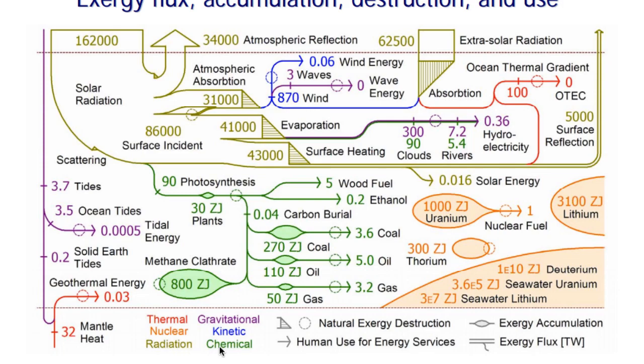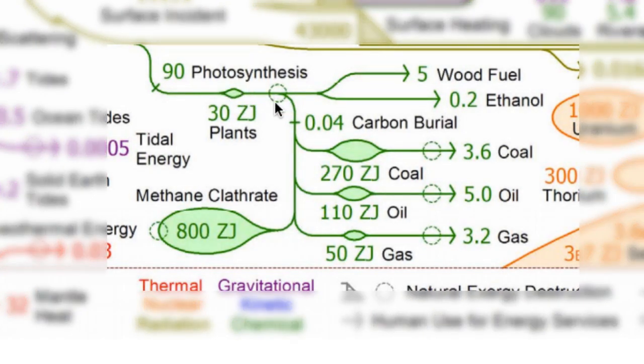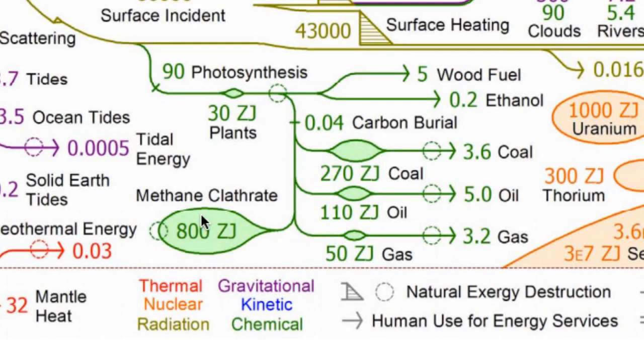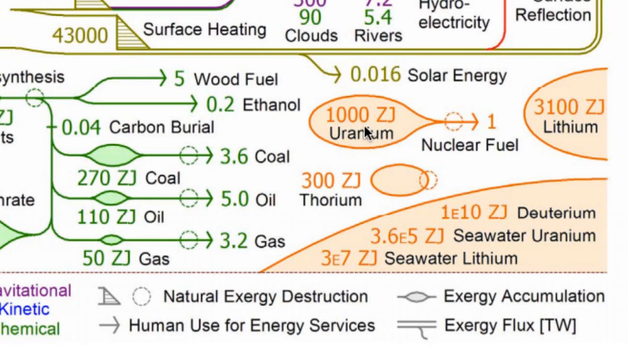So let's go through the different colors. As I said, this greenish-yellow color is the incident solar radiation. This green color is chemical energy. You could see that it involves the photosynthesis and plants, the carbon burial, coal, oil, gas, and methane. These are the different stores of chemical energy. The orange indicates nuclear energy, as shown over here: uranium, lithium, and the seawater types of radiation.